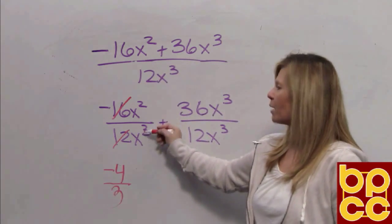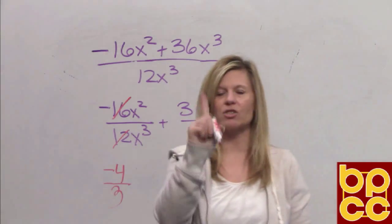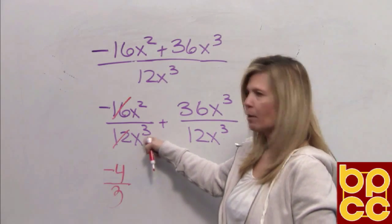Now we're going to divide the variables. We subtract exponents. 2 and 3, when you subtract, will leave you x to the first. That x to the first is going to go in the denominator because that's where there are more x's.